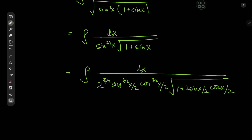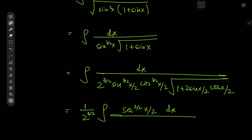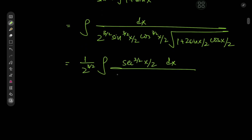The first thing I'd like to do is take this 2^(3/2) term outside, so we have 1/2^(3/2) times the integral. I'd also like to turn the cosine into a secant, because one over cosine equals secant. So we have sec^(3/2)(x/2) dx in the numerator, because I love secant functions when dealing with trigonometric integrals. We're left with sin^(3/2)(x/2) times √(1 + 2·sin(x/2)·cos(x/2)) in the denominator.